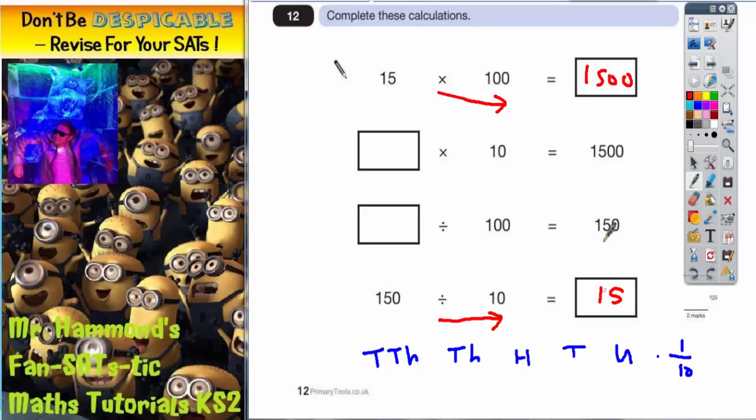So this is a mystery number times 10 gives 1500. So if we are going this way to times 10, if we want to go backwards we've actually got to divide by 10.